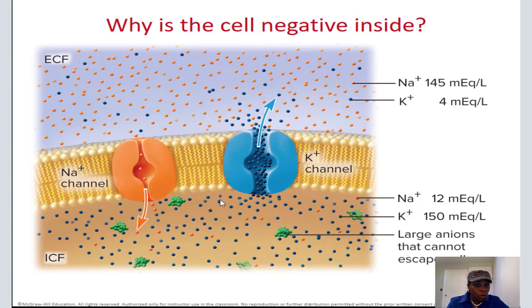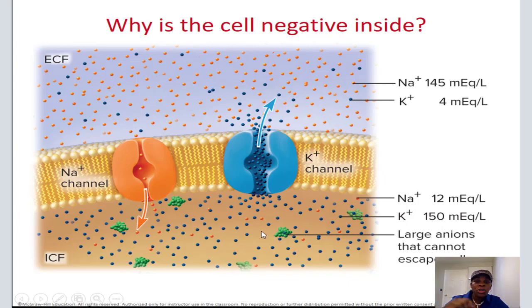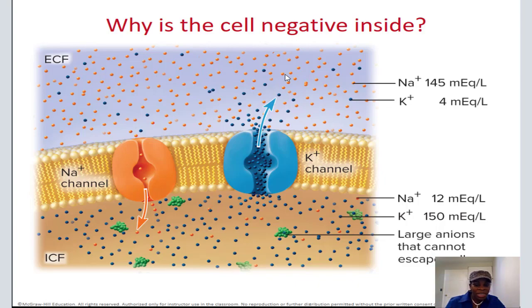So why is the cell negative? One reason is that inside the cell, there are large molecules of proteins — shown in green — that are negative and trapped inside, creating negativity. Second, you have a lot of potassium inside and a lot of sodium outside, and they don't have the same concentration difference. Potassium is 40 times more concentrated inside, while sodium is only 12 times more concentrated outside. That difference creates a power — a membrane potential. Also, the pump moves out three sodium and moves in two potassium, so you have more positive things going out, creating negativity inside the cell.